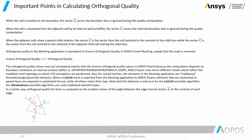Orthogonal quality in the meshing application is equivalent to inverse orthogonal quality in ANSYS Fluent and meshing, except that the scale is reversed. So inverse orthogonal quality is 1 minus orthogonal quality. The orthogonal quality values may not correspond exactly with the inverse orthogonal quality values in ANSYS Fluent because the computation depends on boundary conditions on internal surfaces, like wall versus interior, fan, radiator, or porous jump. ANSYS Fluent may return different results which reflect the modified mesh topology on which CFD simulations are performed.